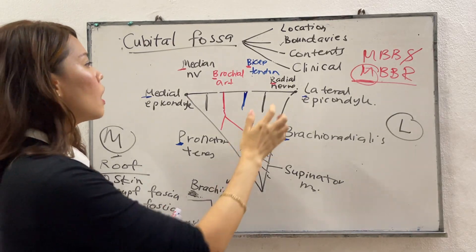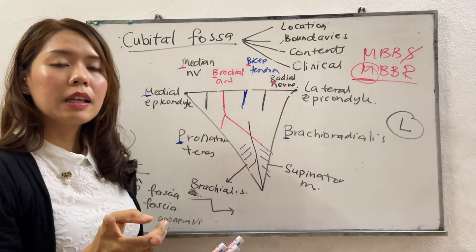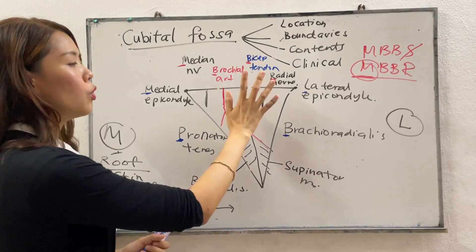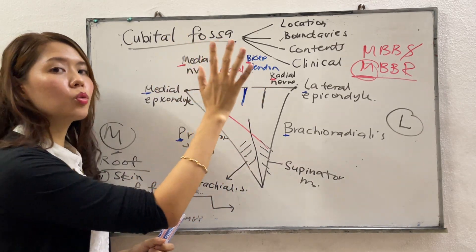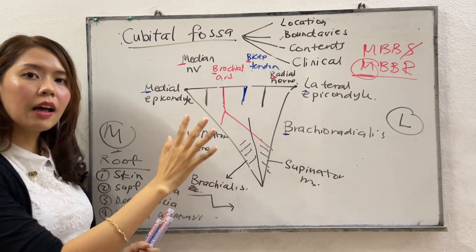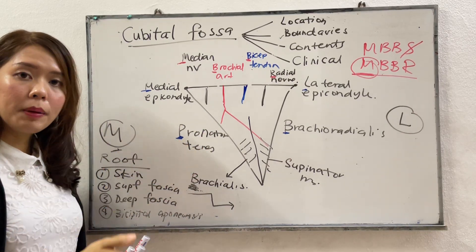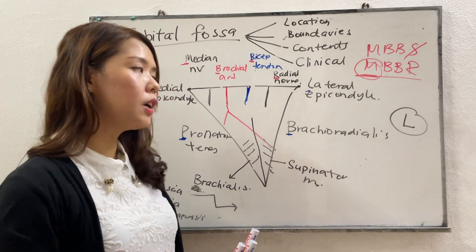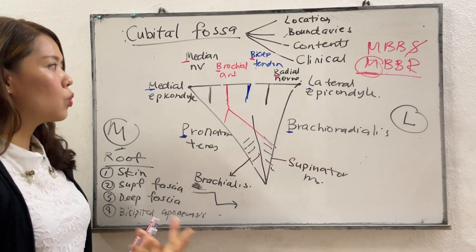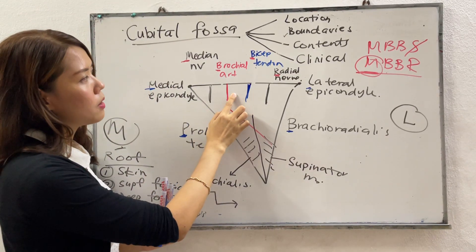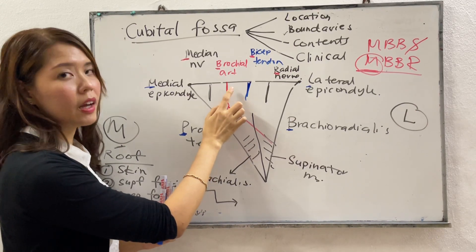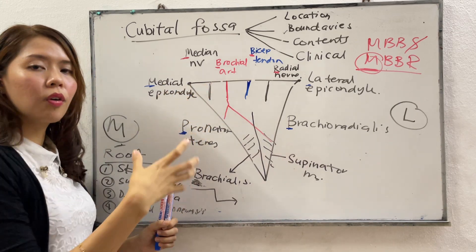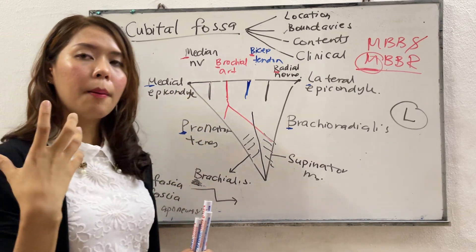Now for some clinical importance of the cubital fossa. There are two important clinical applications. First, the median cubital vein, which forms part of the roof, is the vein typically used for venipuncture. Second, the brachial artery is used to locate the brachial pulse — this is the region where we often place the stethoscope to measure blood pressure.